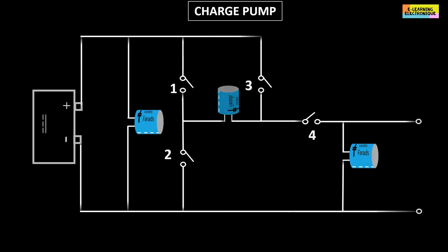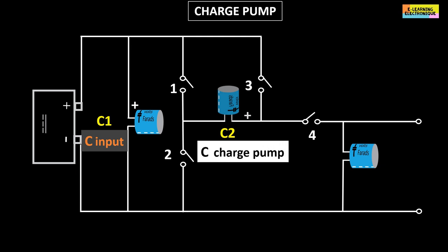In reality and in practice, the circuit is made according to the following diagram. The capacitor C1 is the input capacitor. It is the one that is constantly in contact with the current source. The capacitor C2 placed in the middle is the charge pump capacitor. The C3 capacitor is the output capacitor. The four switches are rearranged according to this configuration.